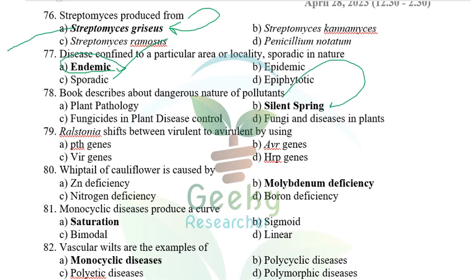'Silent Spring' explains the dangerous effects of pesticides, especially DDT — DDT was banned largely because of this book. It is a fantastic book. The next question: Ralstonia shifts between virulent and avirulent by using certain genes — I don't know the answer, so please let me know if you do.